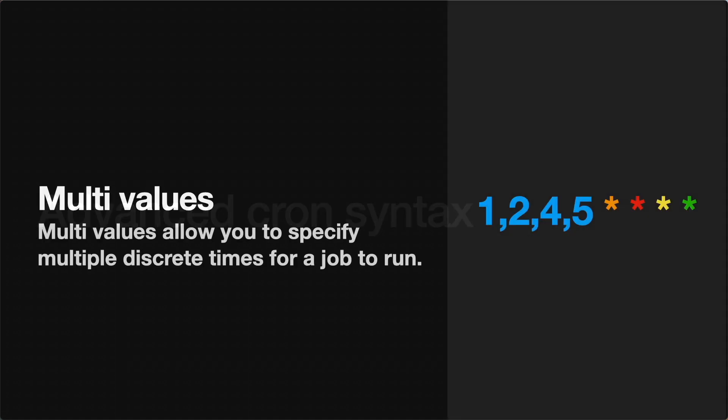We've covered the basic cron syntax, but there is a more advanced cron syntax you should also be familiar with. We're going to start with multivalues. What a multivalue lets you do is insert comma-separated values for specific positions of the cron syntax to indicate different times to run. For example, a cron syntax with comma-separated values in the minute position will run the specific job on the first, second, fourth, and fifth minute of every hour.